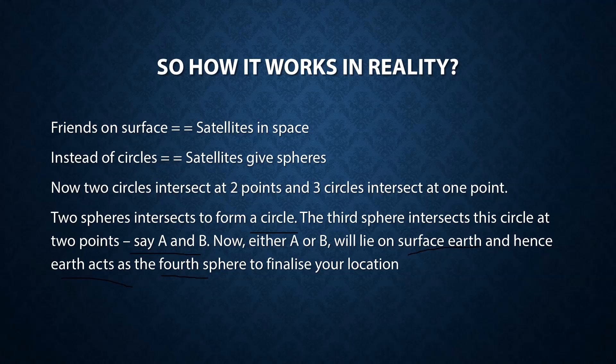Let us see how it works in a diagram. To repeat: the two spheres will intersect to form a circle, the third sphere will intersect this circle at two points A and B. Either A or B will lie on the surface of the earth. Hence the earth will be acting as a fourth sphere to finalize your location.